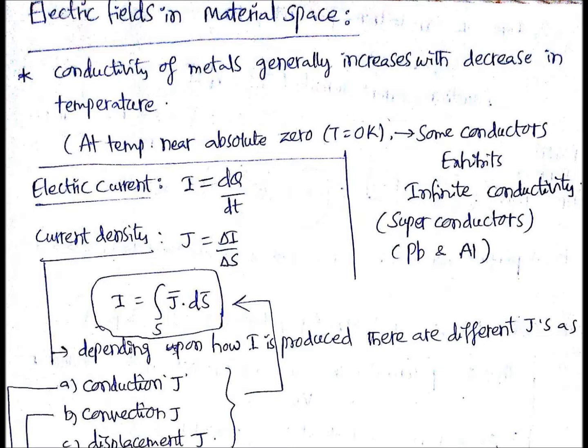Some conductors exhibit infinite conductivity, which are known as superconductors. Examples of superconductors are Pb and Al — PB is nothing but lead, and AL is aluminum.